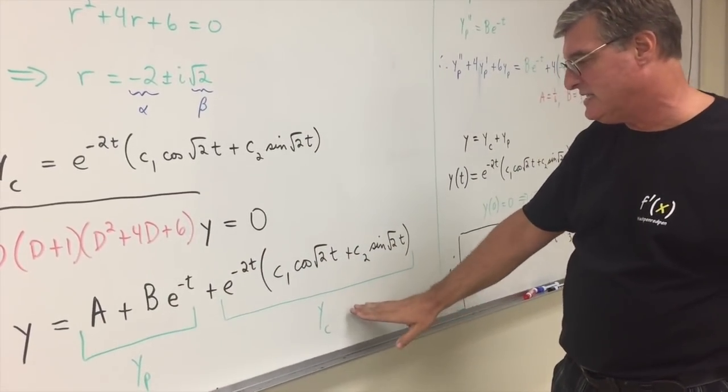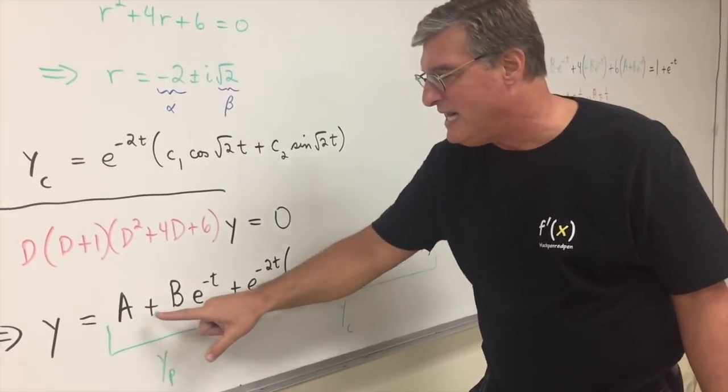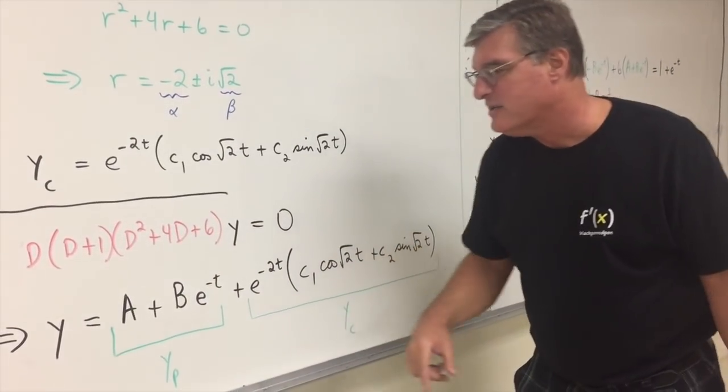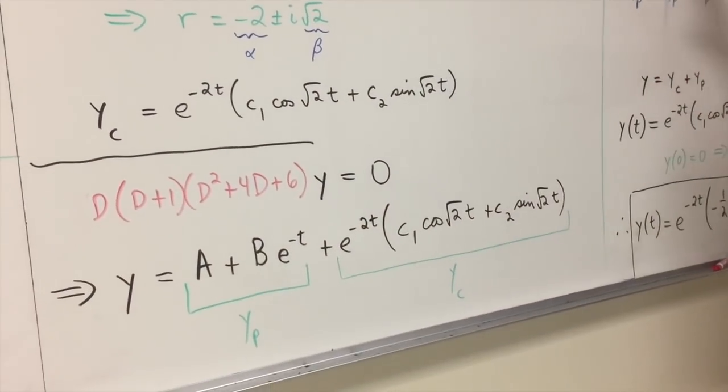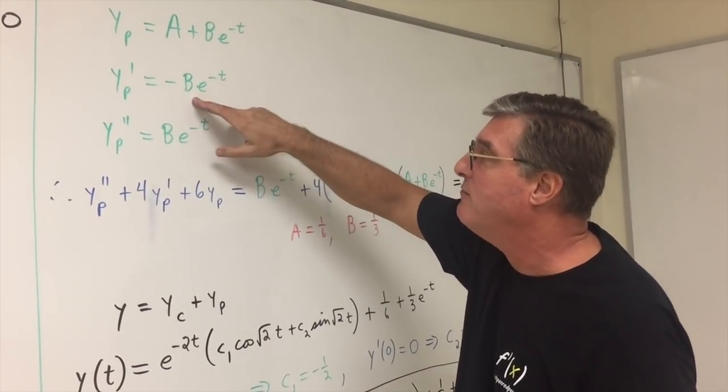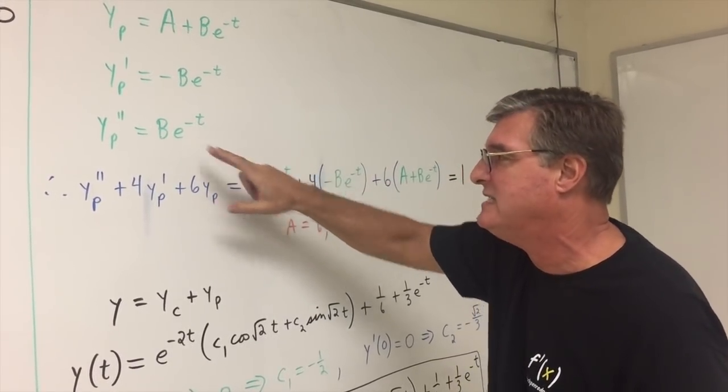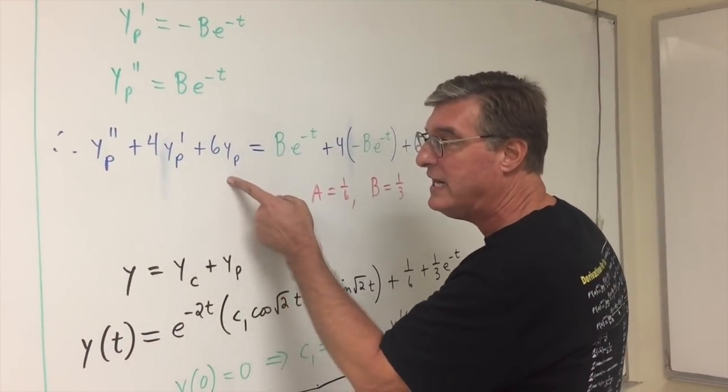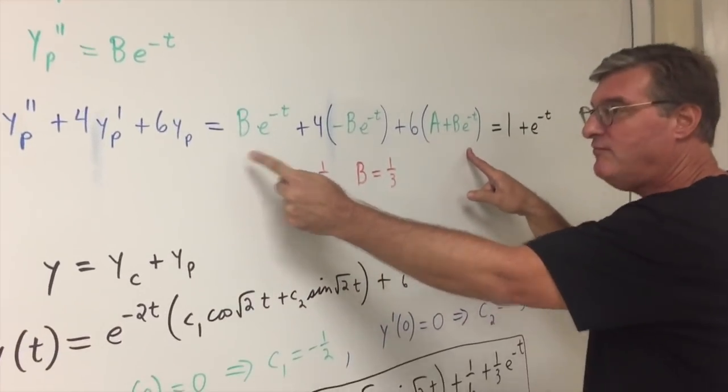Now, remember, the final answer here is the complementary function plus the particular function, which we'll call y sub p. So we need to figure out what the constants a and b are. So, the original differential equation goes up to a second derivative. So take your y sub p, take two derivatives of it, so the derivative of a plus b e to the minus t is minus b e to the minus t. Take another derivative of that, so you're going to get b e to the minus t. The left-hand side of the differential equation, if you put in your y sub p into the left-hand side, you're going to get this.